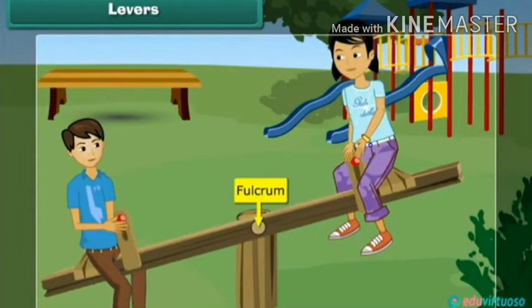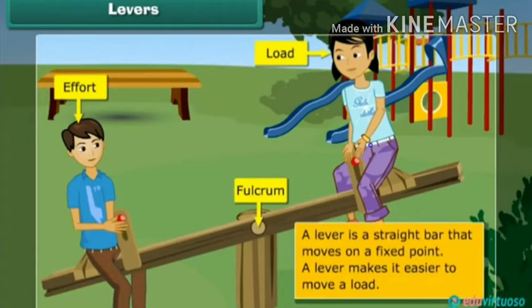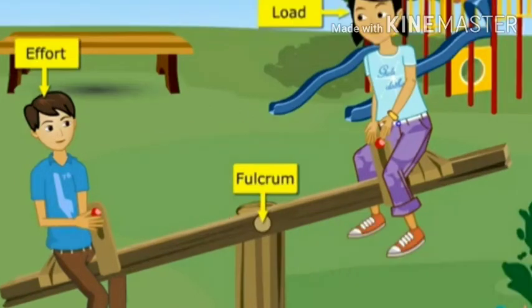When we go to the sea side, we have an effort. That effort is because it is a load. We have a lever to do this. This is the fulcrum, effort, and load. When we go to the load, we go to the resistance. Load and resistance.